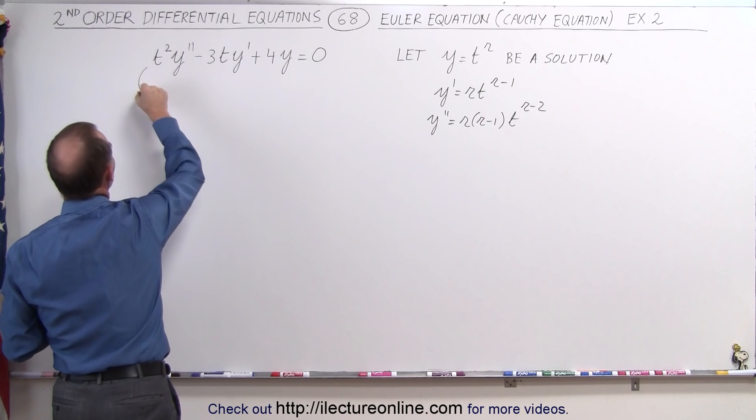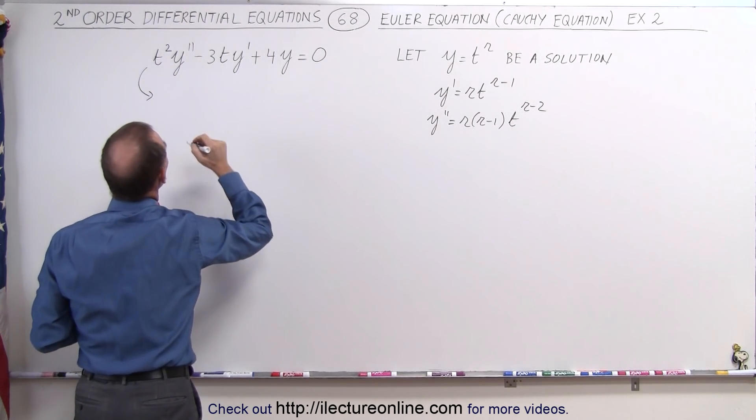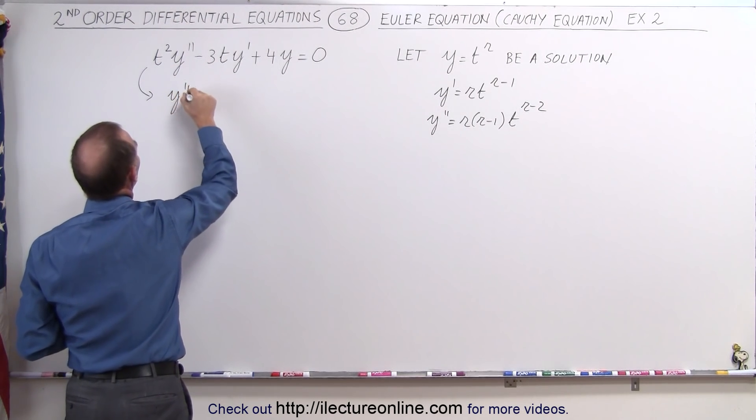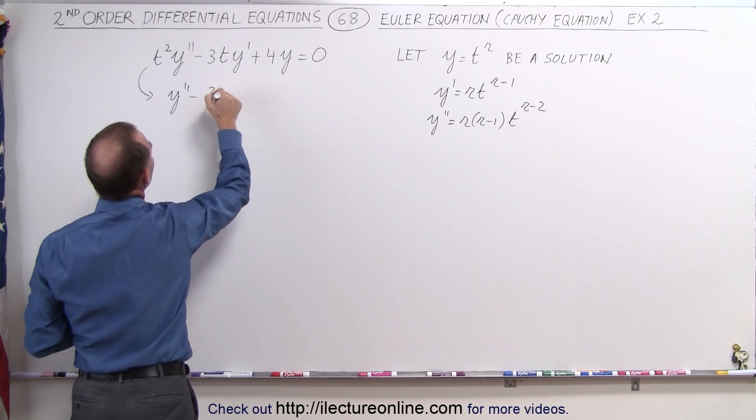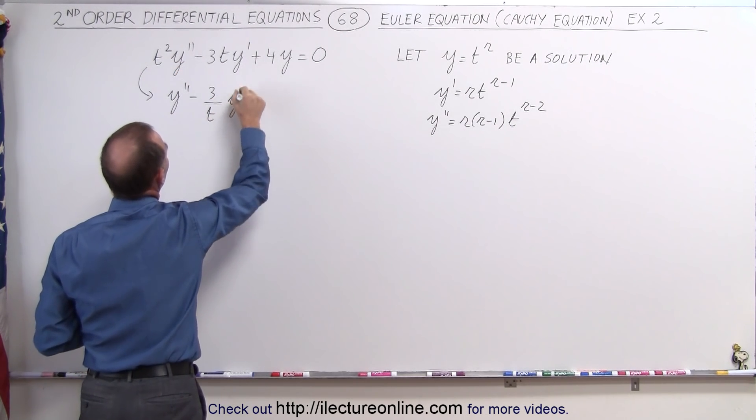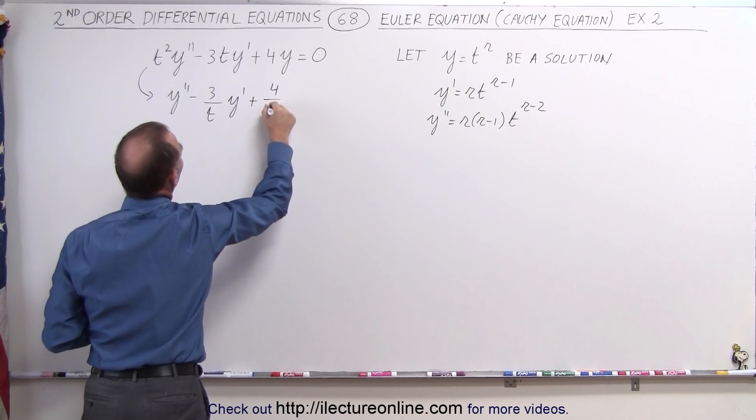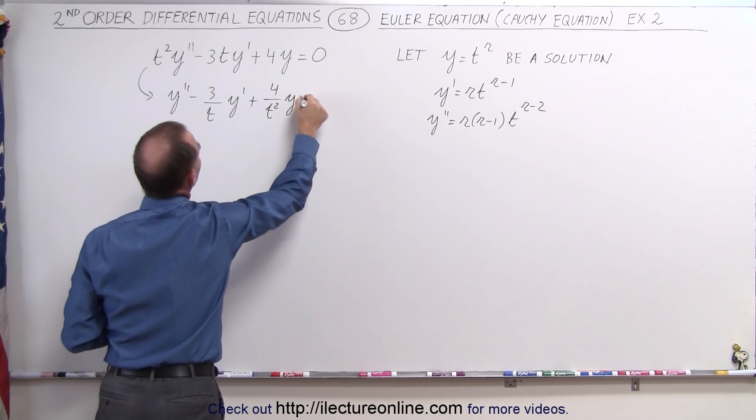We want to rewrite this by dividing everything by t squared, and we end up with y'' - 3/t y' + 4/t² y = 0.